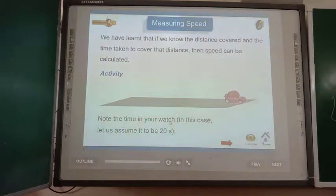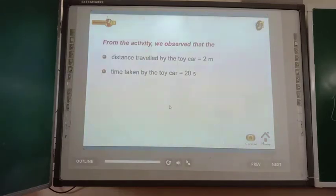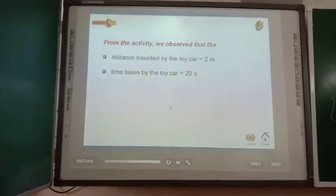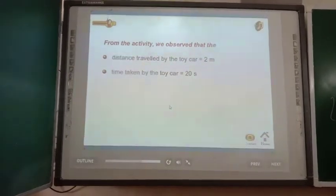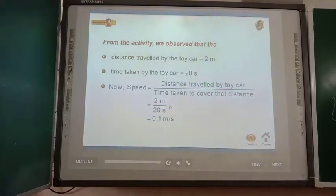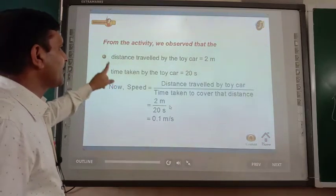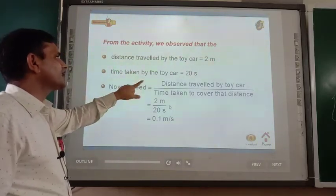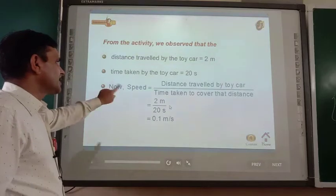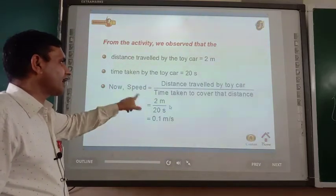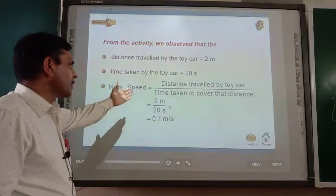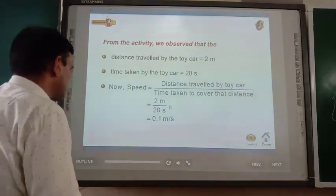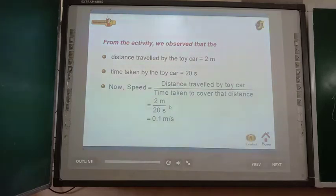We will perform one activity. Using observed data, we can calculate the speed by dividing the distance travelled by the time taken. Here, the distance travelled by the toy car was 2 meters and the time taken by the toy car was 20 seconds. So speed equals distance travelled divided by time taken: 2 meters divided by 20 seconds, which equals 0.1 meters per second.